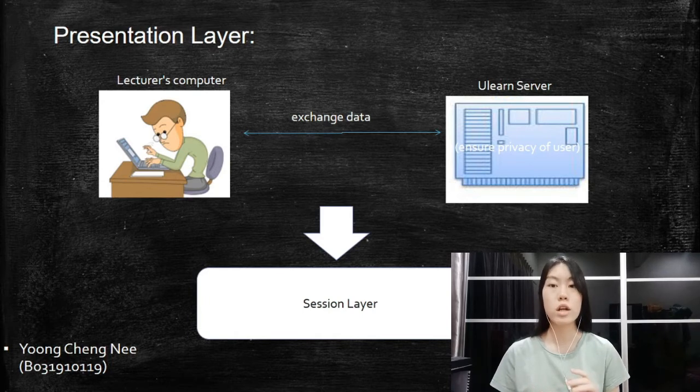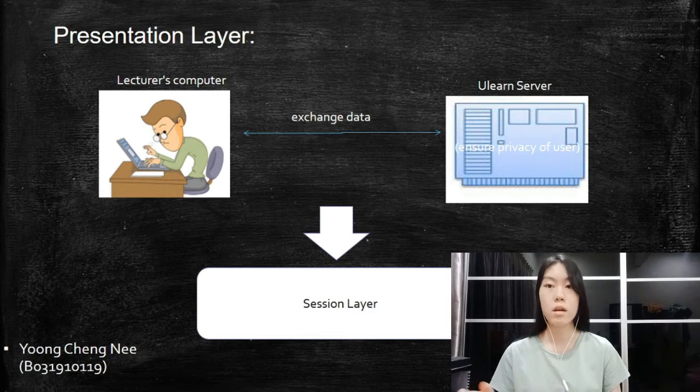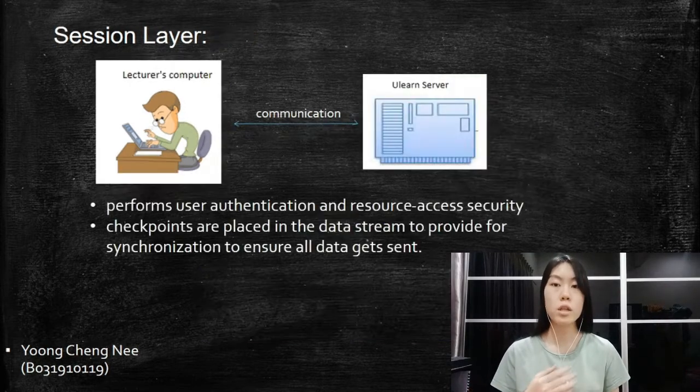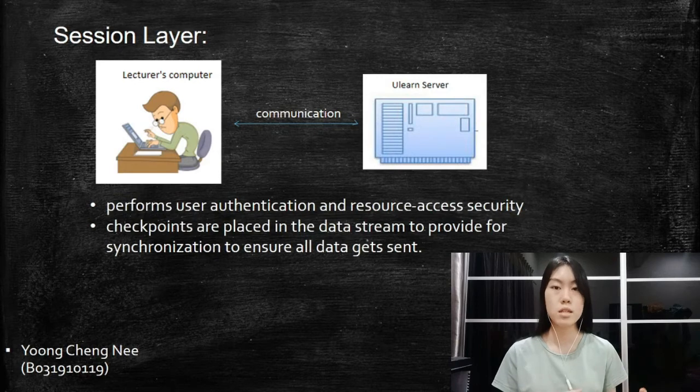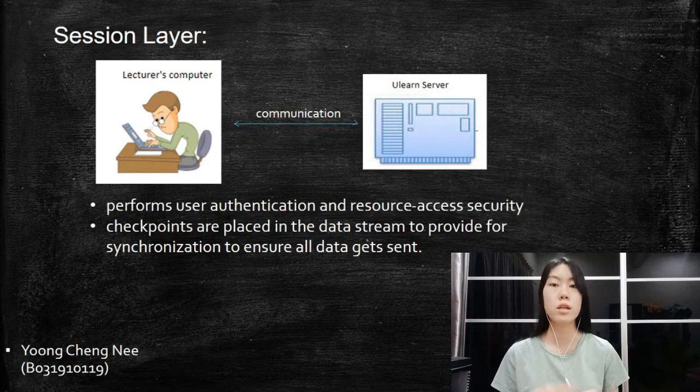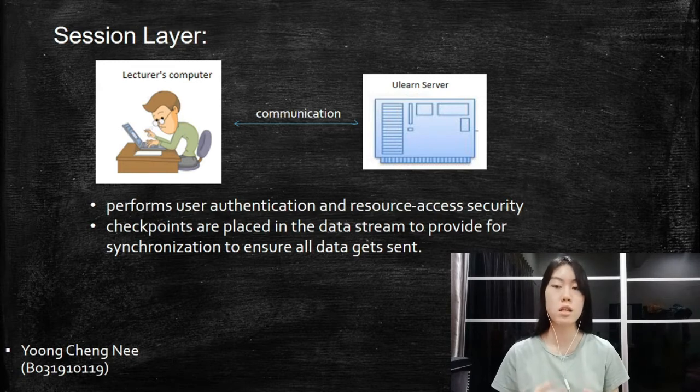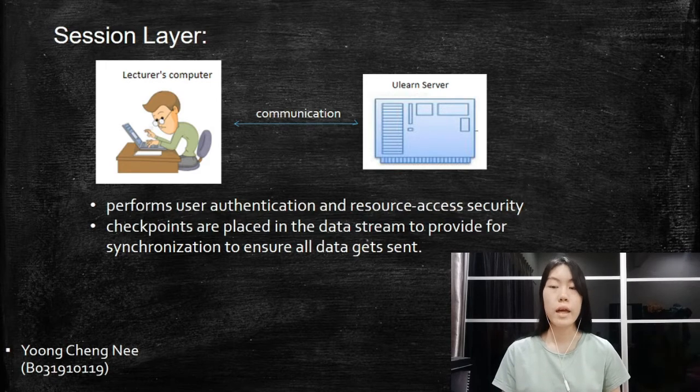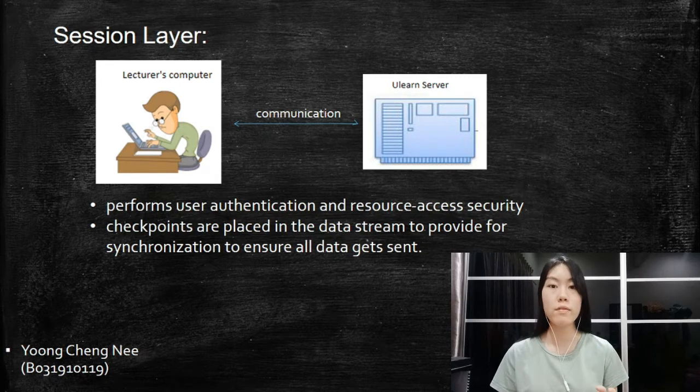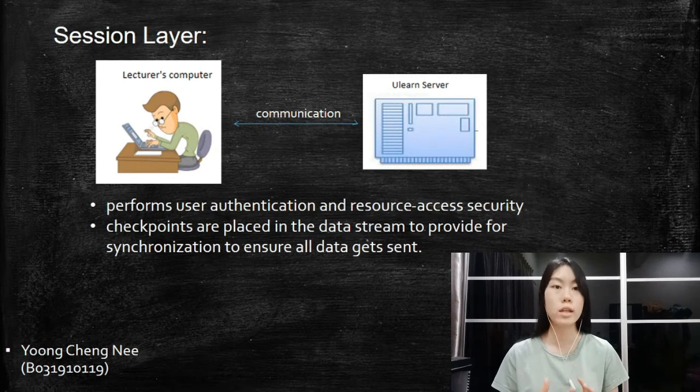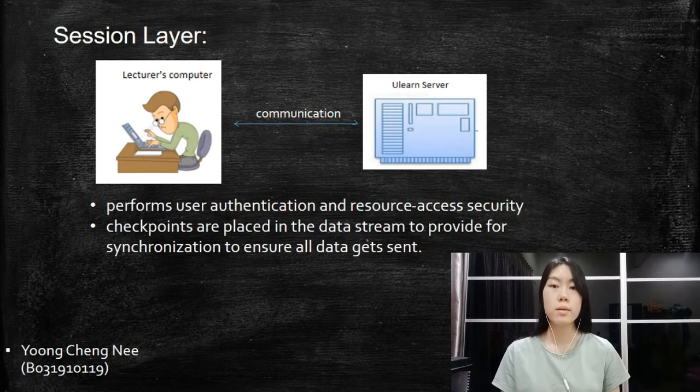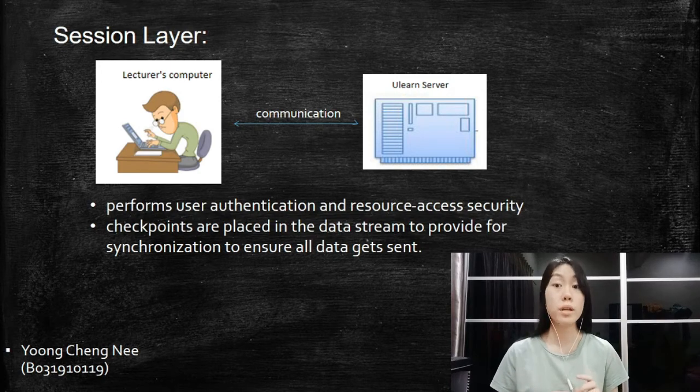The data is then transmitted to the session layer. It will establish the communication connection between processes running on the computer and server. It will perform user authentication and resource access security that are needed to allow processes to communicate over the network. In this layer, checkpoints are placed in the data stream to provide synchronization to ensure all data gets sent.